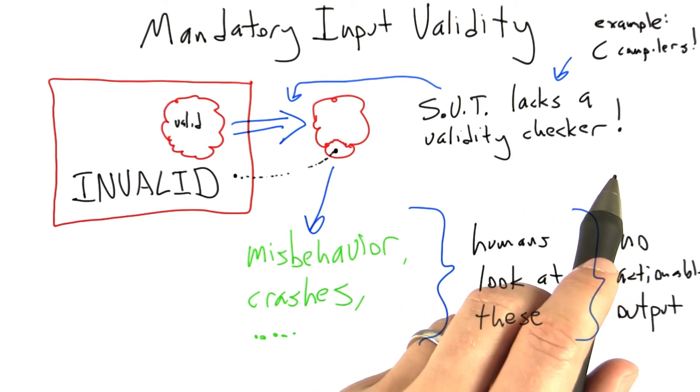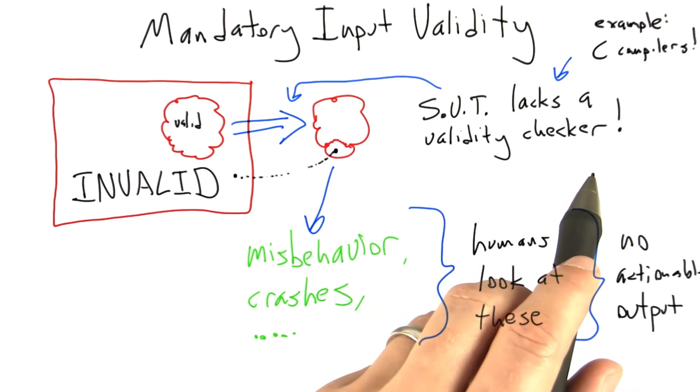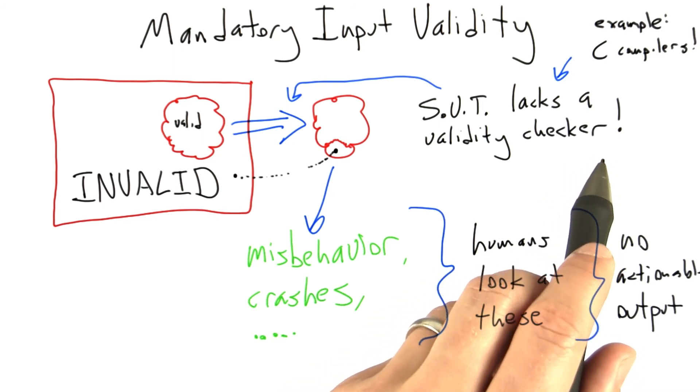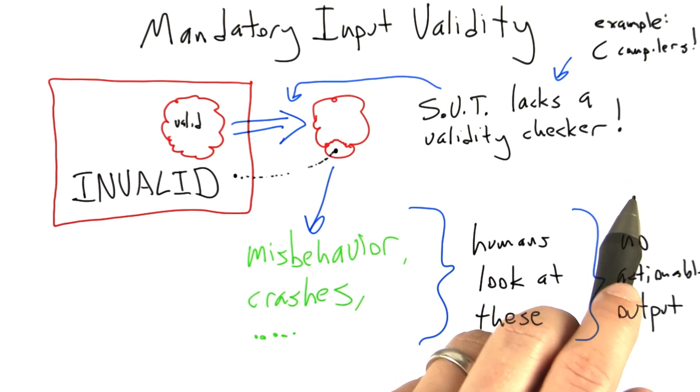So in summary, the input validity problem bites us as a performance problem almost every time we write a random tester. It bites us in a much more serious way when we have software under test that lacks a reliable validity checker.